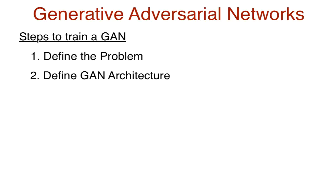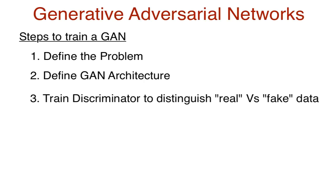The third step is to train the discriminator model to distinguish between real and fake data. When we speak of training, we need to feed it both types. We need to train it on data from the dataset and label it as real data, and to train it against fake data, we feed it fake data generated by our generator — the counterfeiter — with the label fake data.